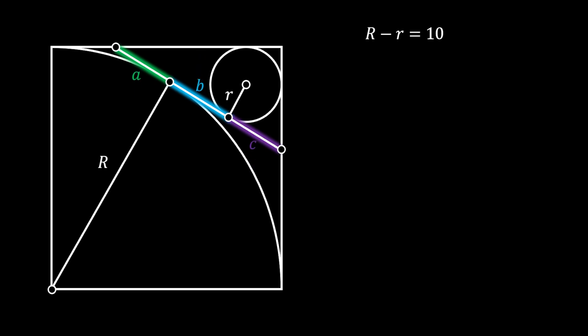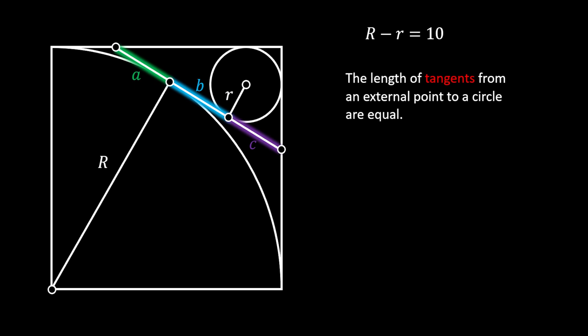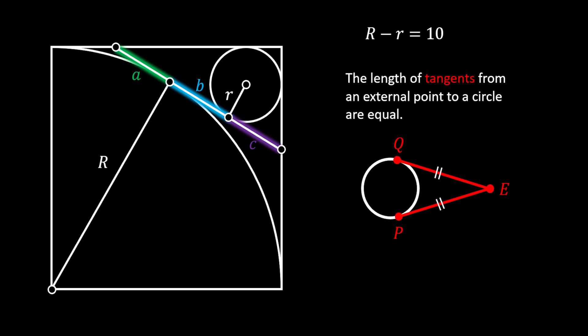In order to find other values that we need, we're going to use one really nice property of a circle that states that the length of tangents from an external point to a circle are equal. If we mark the external point as E and the points of tangency as P and Q, we can conclude that EP must be equal to EQ.